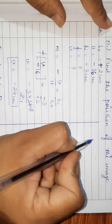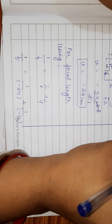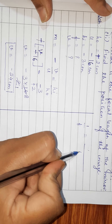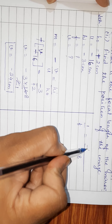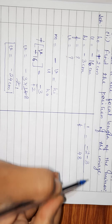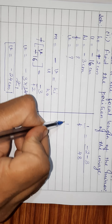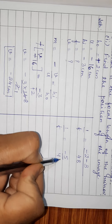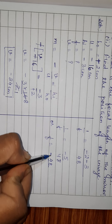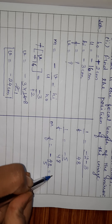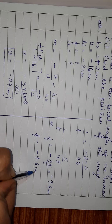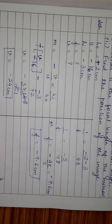Using the mirror formula with U equals minus 16 and V equals minus 24: LCM is 48. So 1 upon F equals minus 2 upon 48 plus minus 3 upon 48, giving 1 upon F equals minus 5 upon 48. Therefore F equals minus 48 upon 5, that is minus 9.6 centimeter. So the focal length is minus 9.6 centimeter.